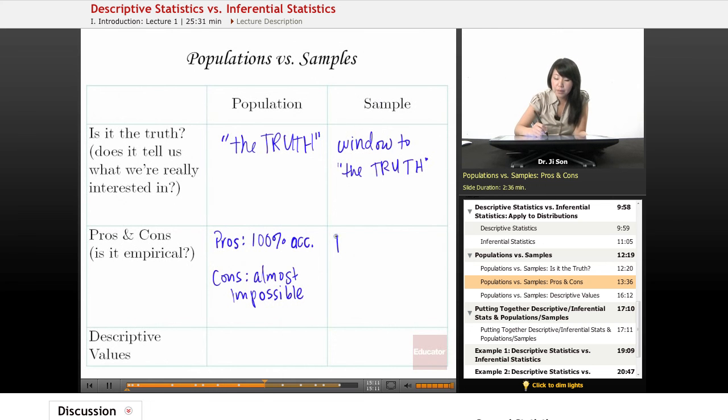On the other hand, the sample has the pro of being convenient. It's actually really easy to get data from just a sample of the population. You don't have to get the whole population, you just have to get a sample of it. And so it's really convenient and easy to get.